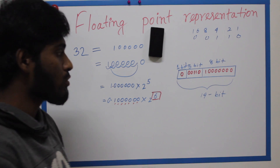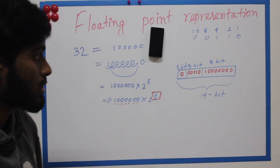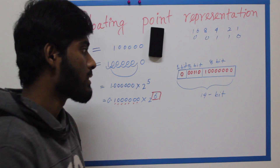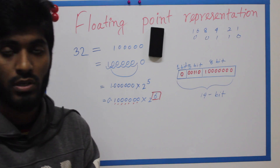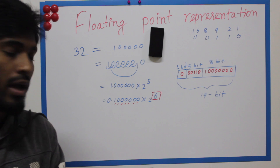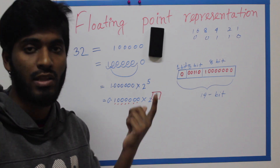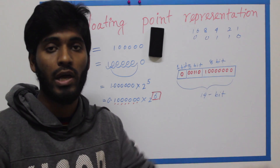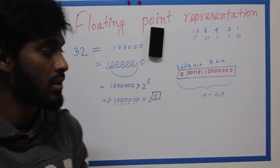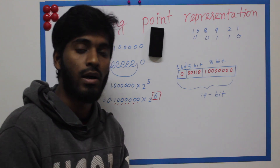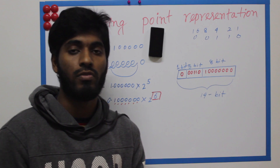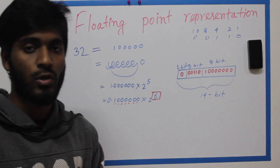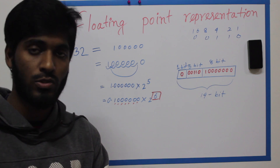That's right — this is the basic floating point representation. Now when you have to do this in an exam, you need to know about the exponent bits and the significant part. I will reply to you and give you a response. We are going to show you more in the next tutorial. God bless you.